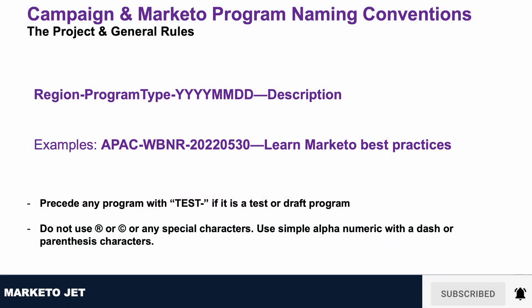Naming convention is paramount in order to keep your Marketo instance organized. It will come in handy when you build your campaign performance report. Without a proper naming convention, your Marketo instance can quickly become messy, disorganized, and difficult to work in, making it hard to find information, which leads to delays in executing campaigns and reporting campaign performance.